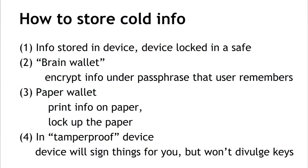With that in place, we can talk about the different ways cold information can be stored. The first way is to store the information on some kind of device and put that device in a safe — it might be a laptop computer, a mobile phone or tablet, or just a thumb drive. We store the information on that device, turn the device off, and lock it up. If somebody wants to steal this, they have to get into our locked storage and take that device.